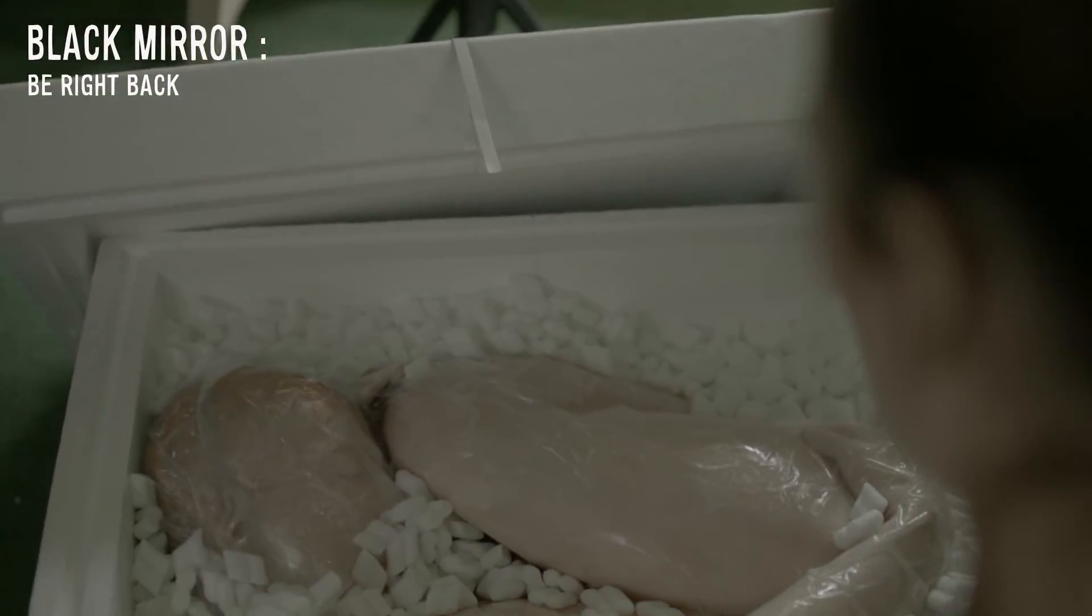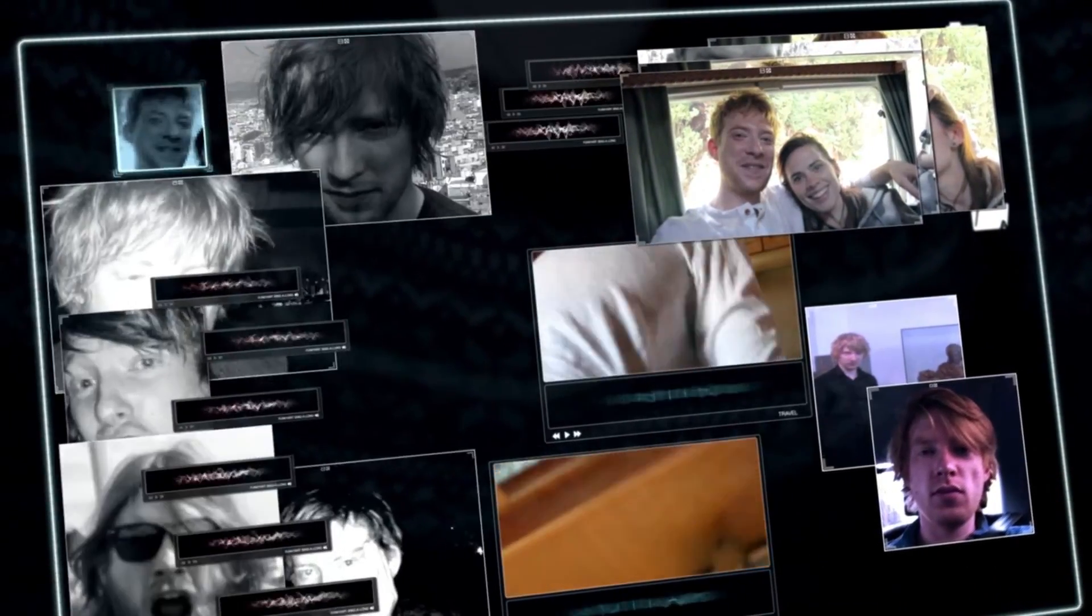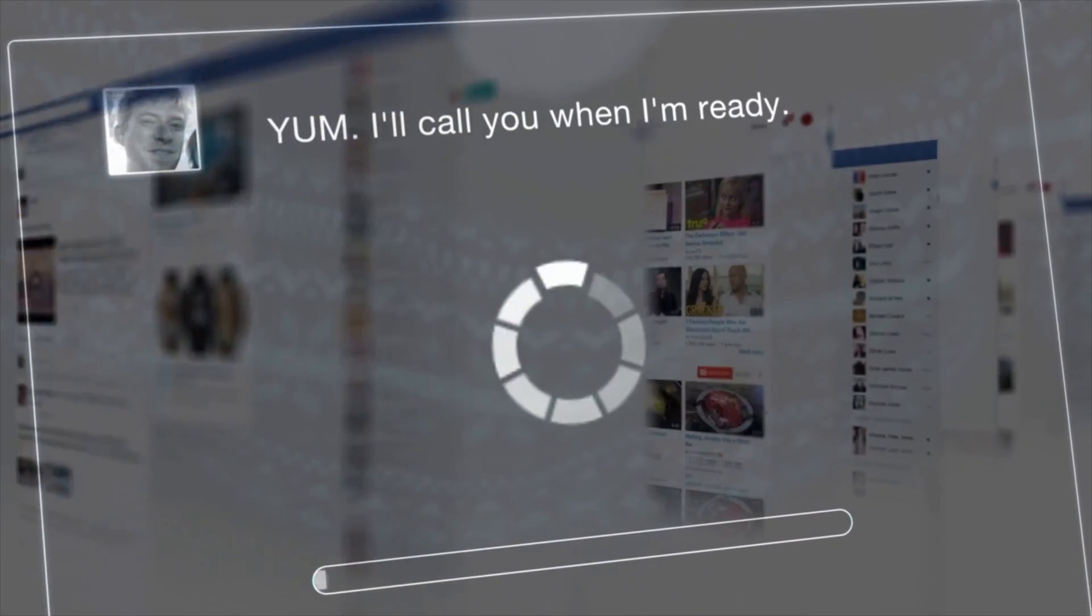A very advanced form of it was shown in the Be Right Back episode of Black Mirror in which there was a system that scouted all of the internet to look at the social media activity of a dead person and tried to recreate a model of the dead person digitally based on all his posts.